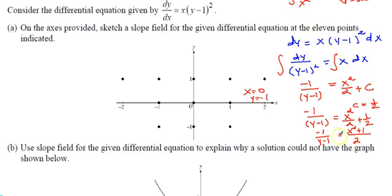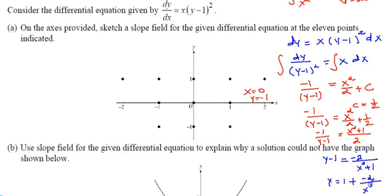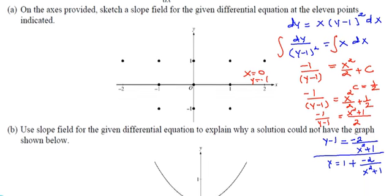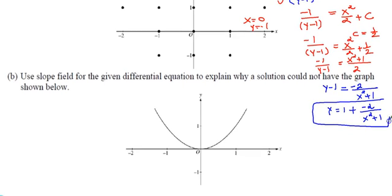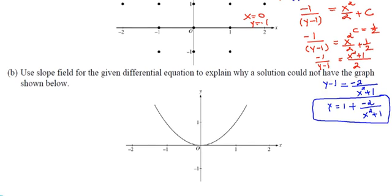To solve for y, flip both ratios: (y-1) = -2/(x²+1). Then y = 1 - 2/(x²+1). This is your particular solution. You don't need to simplify further — leave it like this. You can clearly see there is a horizontal asymptote at y=1, which confirms what the slope field showed.